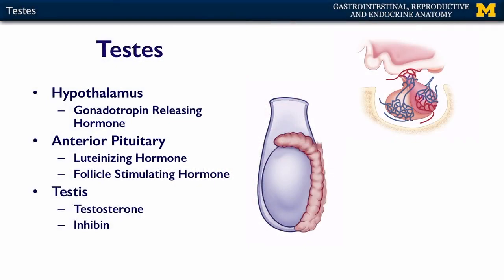The testes are another endocrine gland that are regulated by the hypothalamus and pituitary. The hypothalamus secretes gonadotropin releasing hormone. The general term is gonadotropin because it has an effect on both gonads — ovaries and testes — so the generic term is gonad.